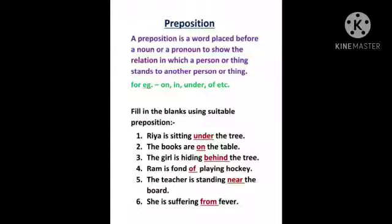For example, fill in the blanks using suitable preposition. Rhea is sitting under the tree. Rhea क्या है? Noun. The tree क्या है? Noun. तो the tree से पहले क्या आया है? Under. तो under क्या है? Preposition. तो under क्या कर रहा है? Rhea और tree के बीच में relations हो कर रहा है. जैसे Rhea is sitting under the tree — जो Rhea है वो पेड़ के नीचे बैठी है.